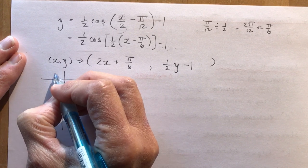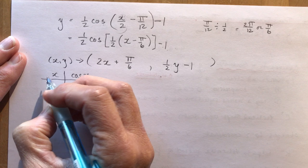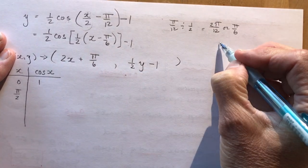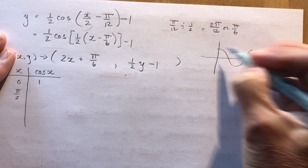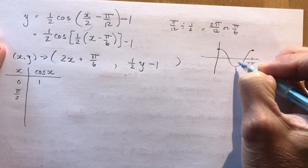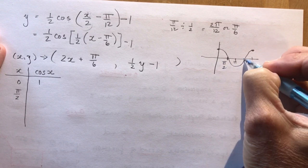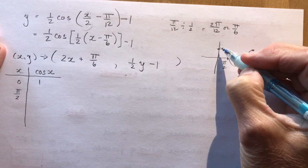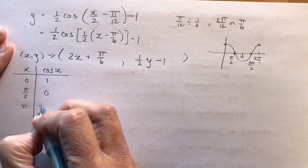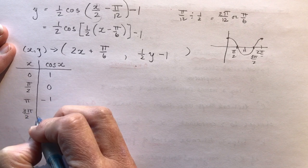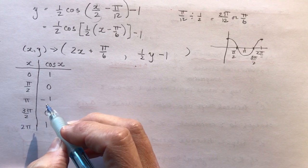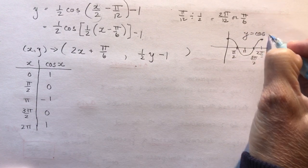I'm transforming a cosine function, so I'll list key points of y = cos x. Quick sketch: starts at 1, comes down, back up. Key points: (0, 1), (π/2, 0), (π, −1), (3π/2, 0), (2π, 1). Those are the five key points of the parent function y = cos θ.